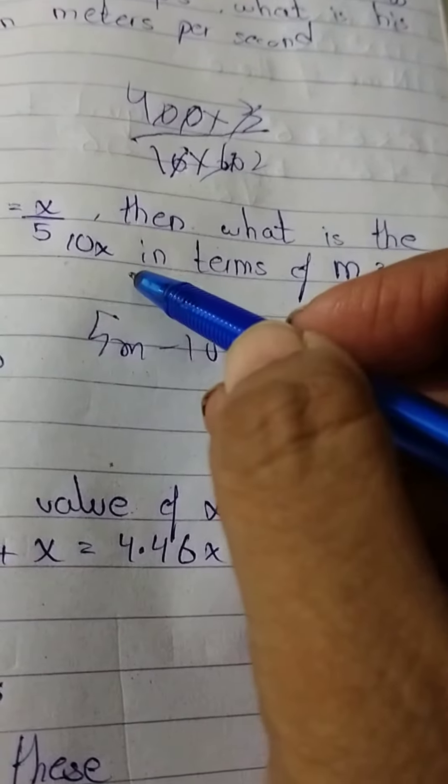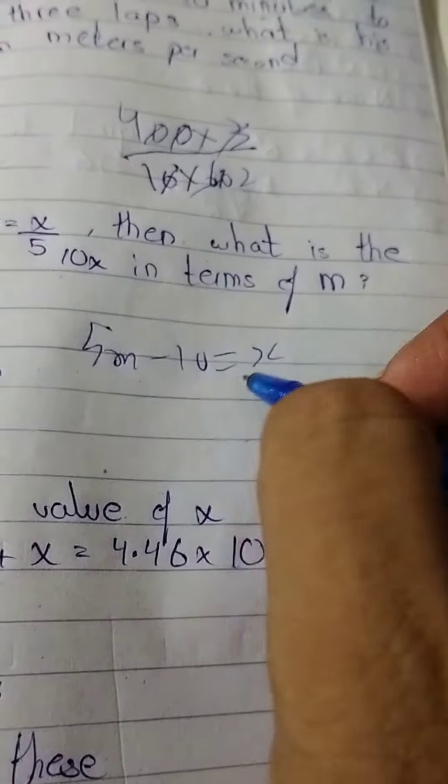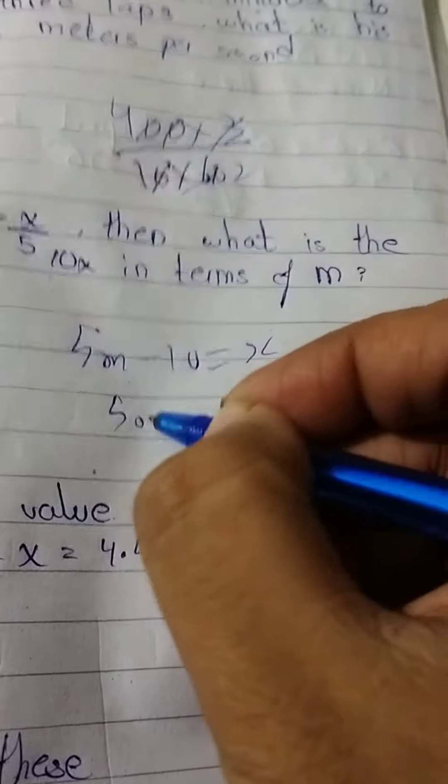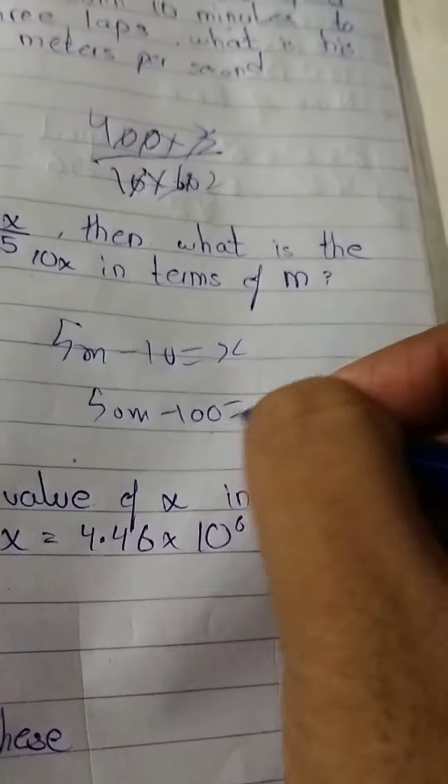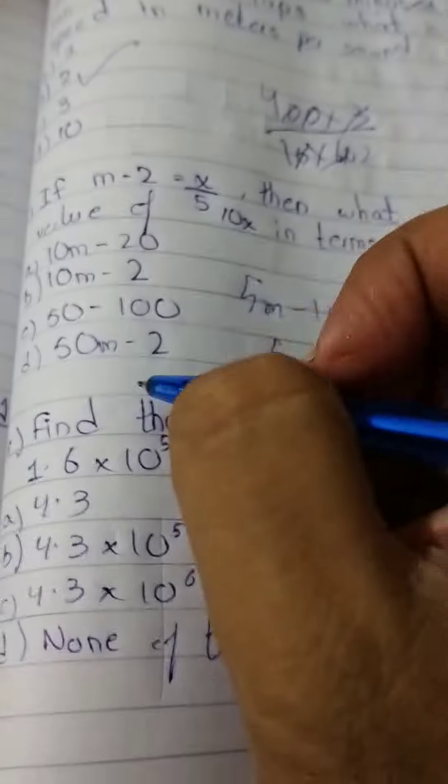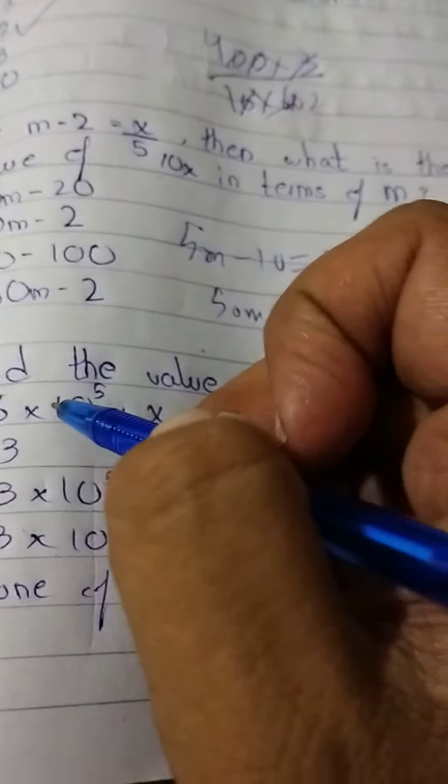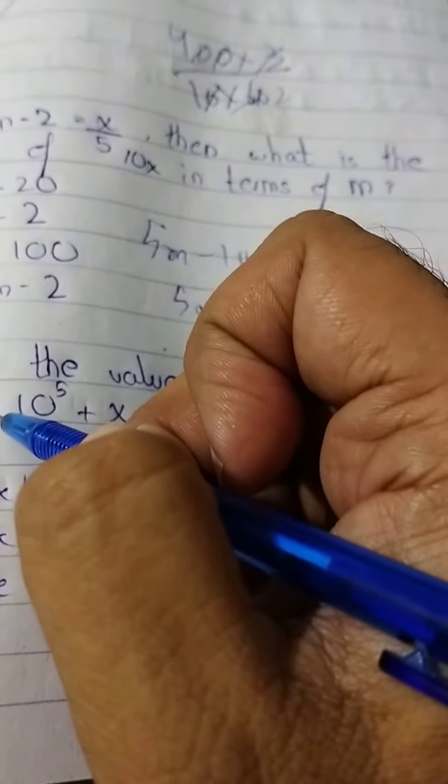If you're asking 10x, then it will multiply by this equation. 50m minus 100 equal to 10x. 50m minus 100 equal to 10x.